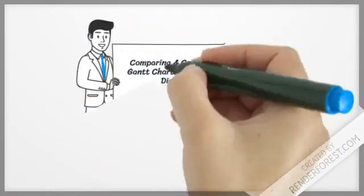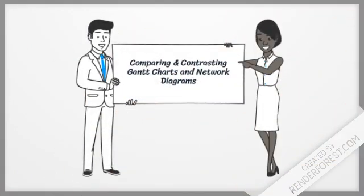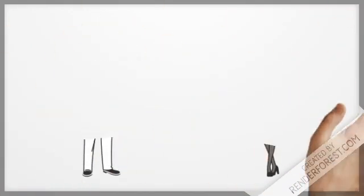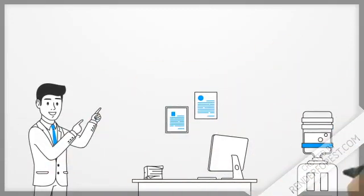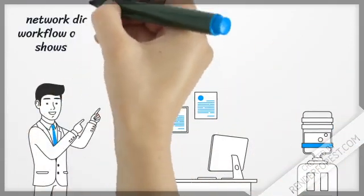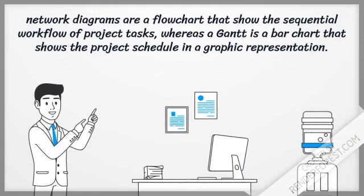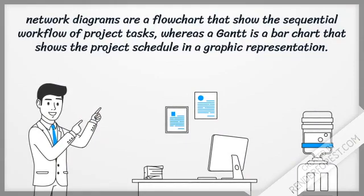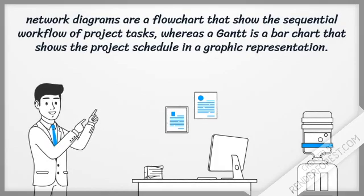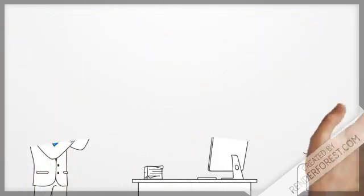Next, I will move to comparing and contrasting Gantt charts and network diagrams. Network diagrams are flowcharts that show the sequential workflow of project tasks, whereas a Gantt chart is a bar chart that shows the project schedule in a graphic representation.